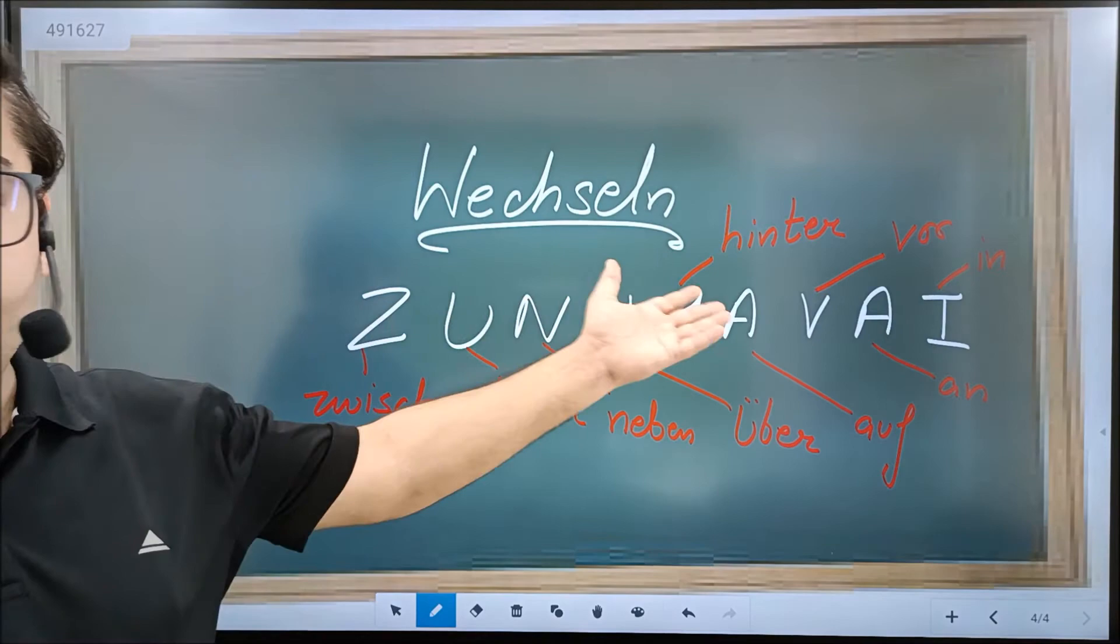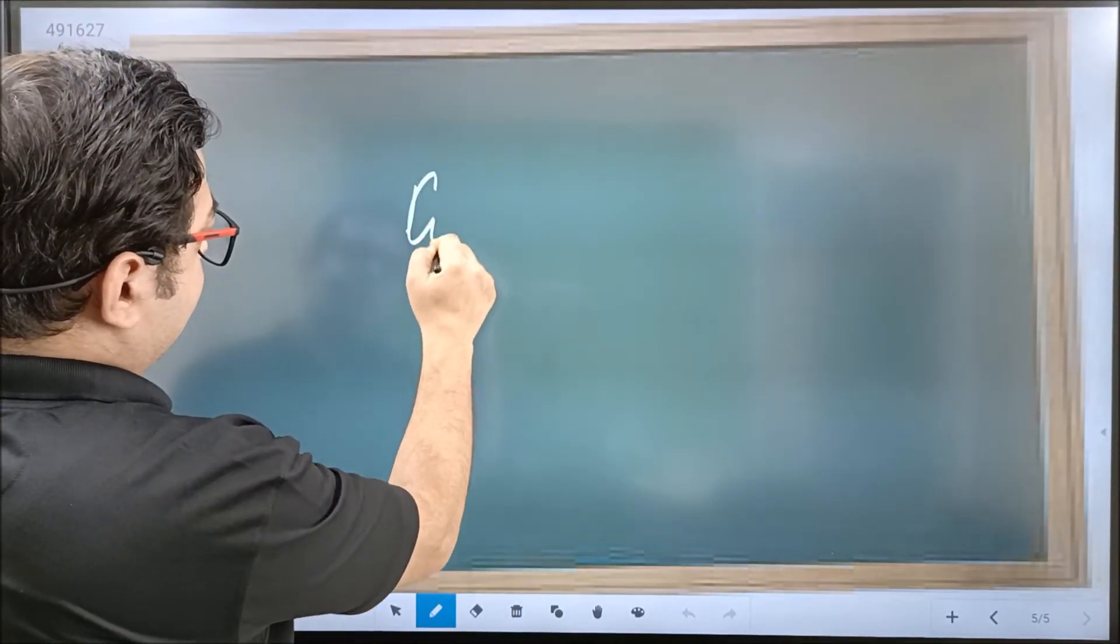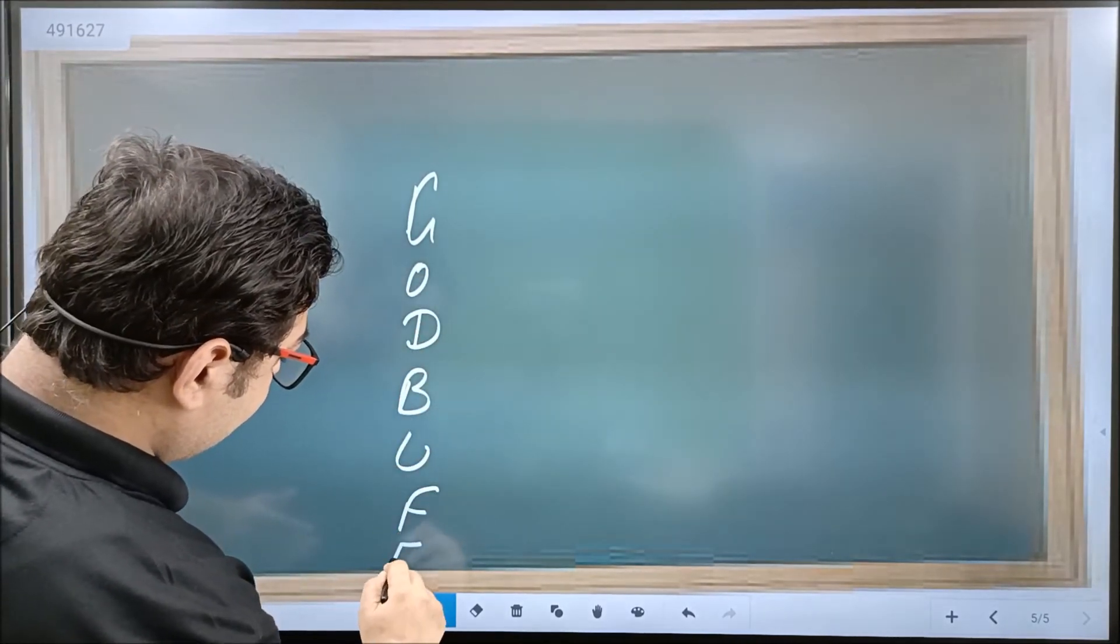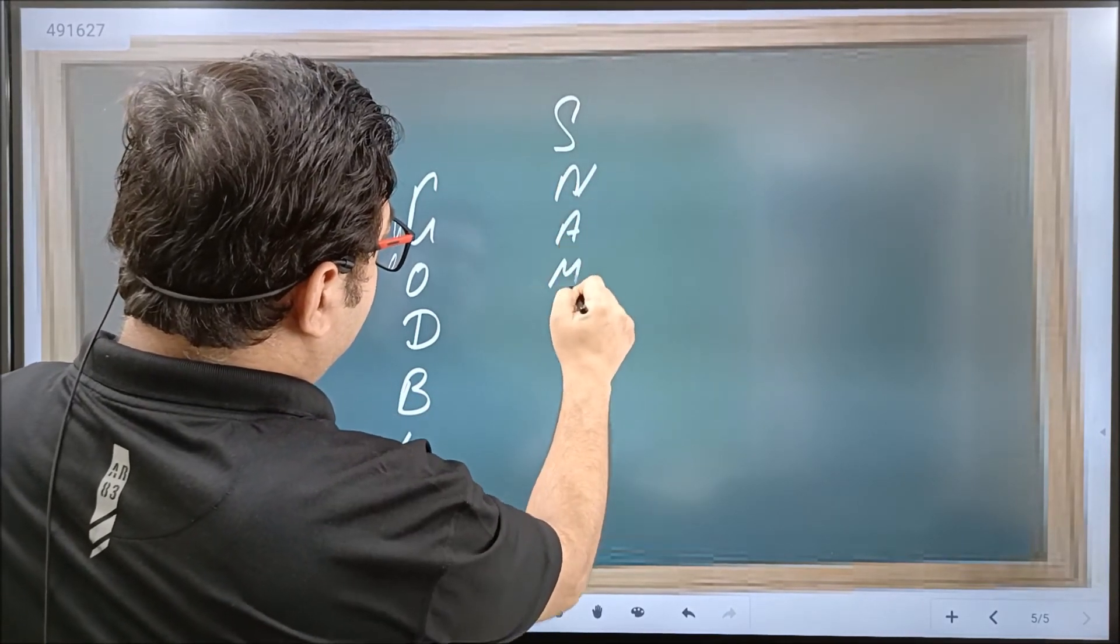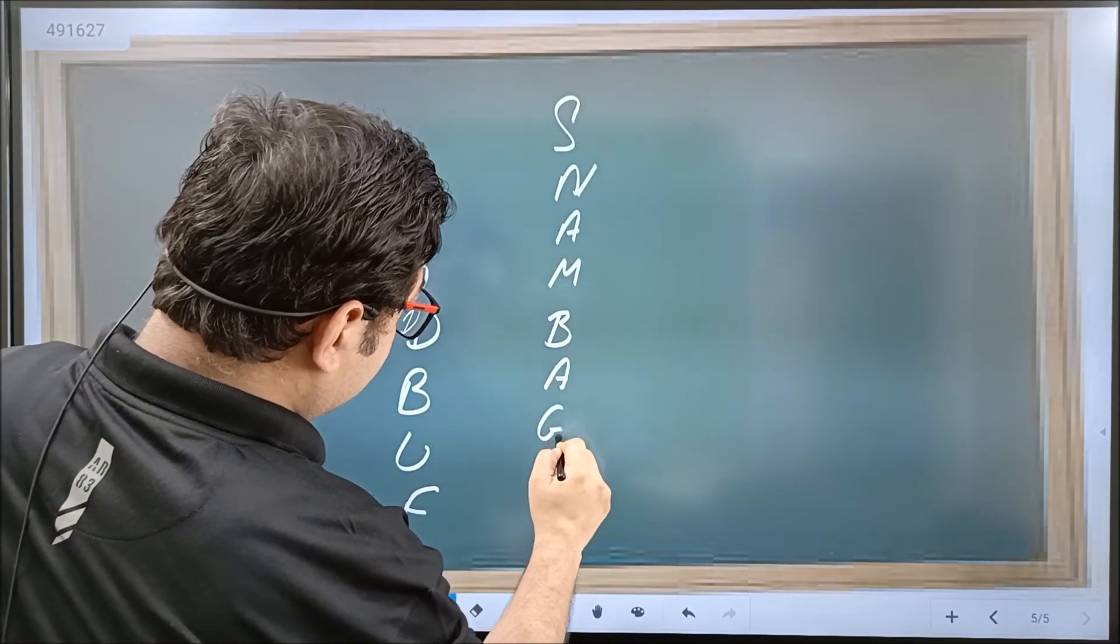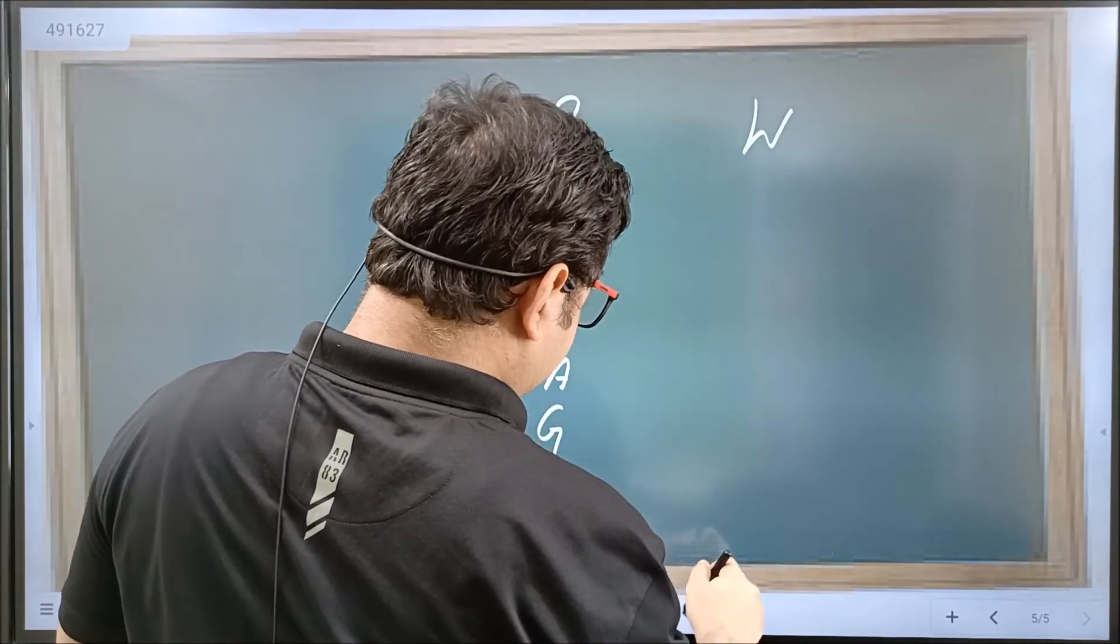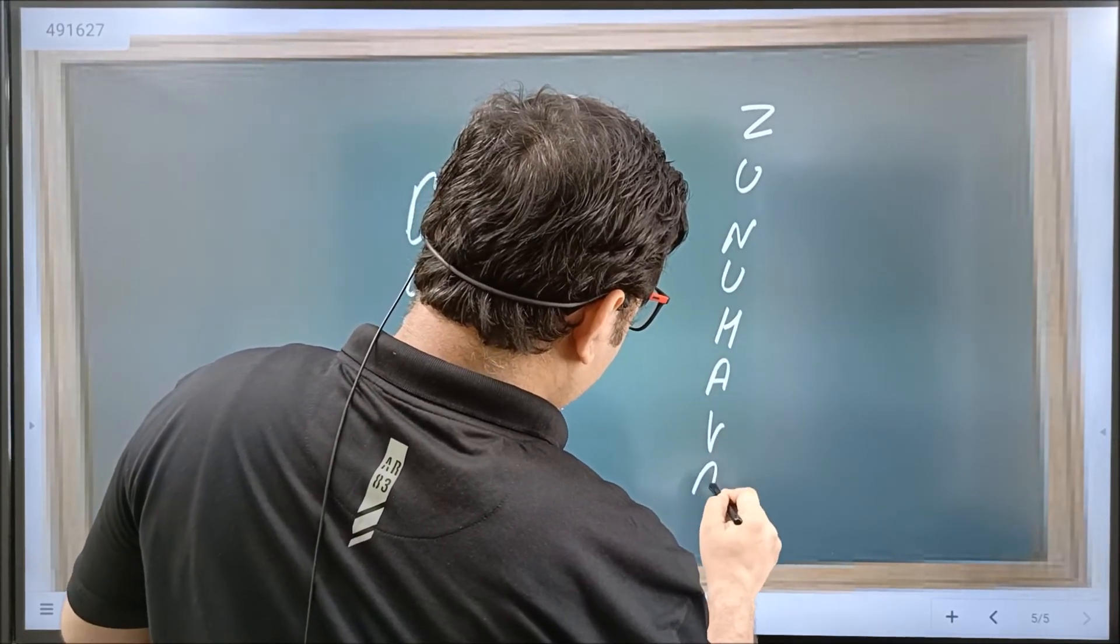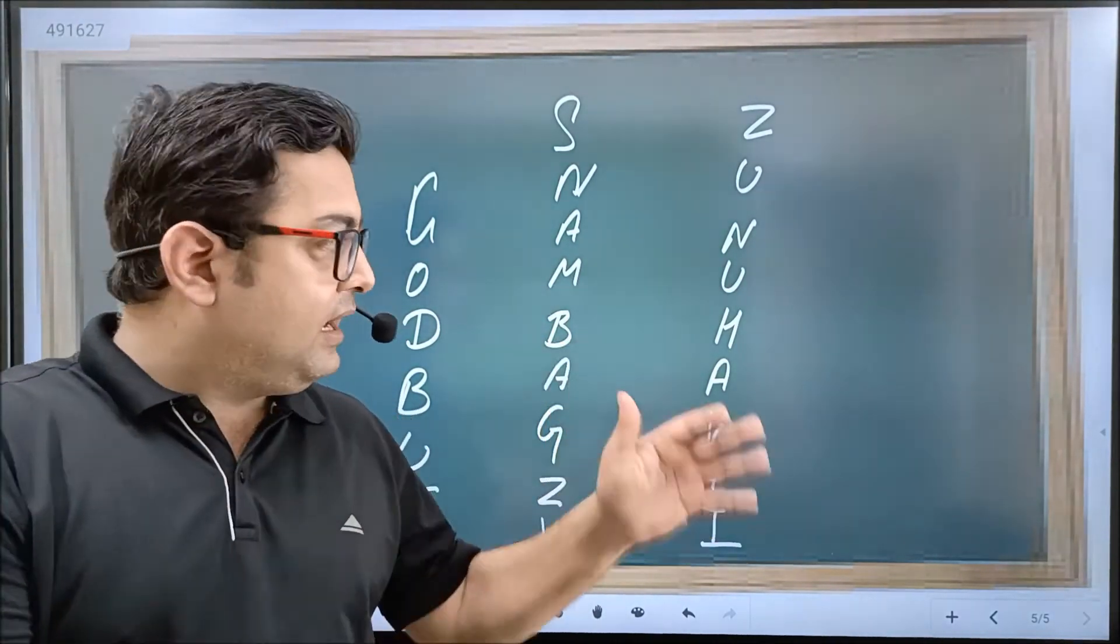So these are three acronyms. Let's make a list of the acronyms so far. We have GOD BUFFET for accusative, we have SNAMBAG ZIVI for dative, and we have SUNUL HAVAI for Wechsel. You may learn these acronyms and it will be easy for you to memorize prepositions in German grammar.